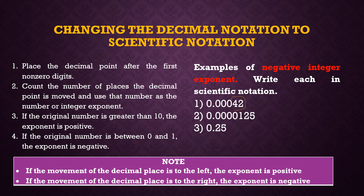For numbers between 0 and 1, when we convert them we move the decimal point to the right, and the result will have a negative exponent.